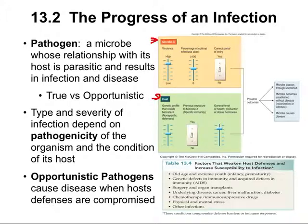We have a number of slider bars — for example, virulence, then how many microbes are there, as well as whether there's an appropriate portal of entry. In the host, we'll consider the genetic profile, whether the host has previously been exposed to the microbe, and the general level of health of the individual.